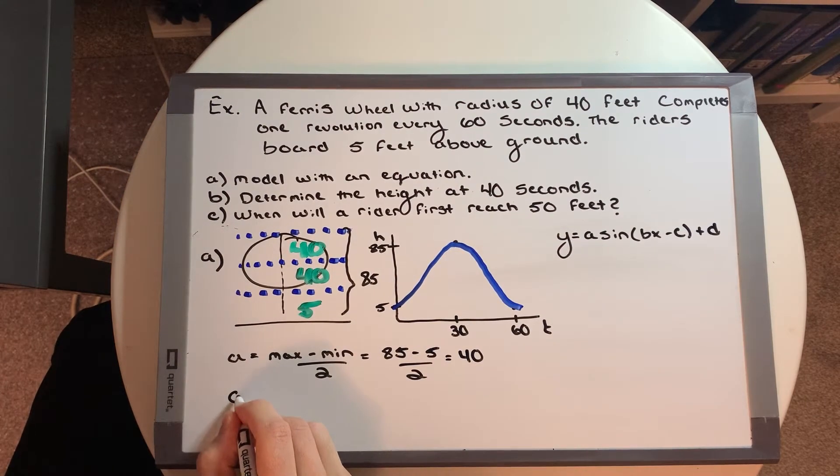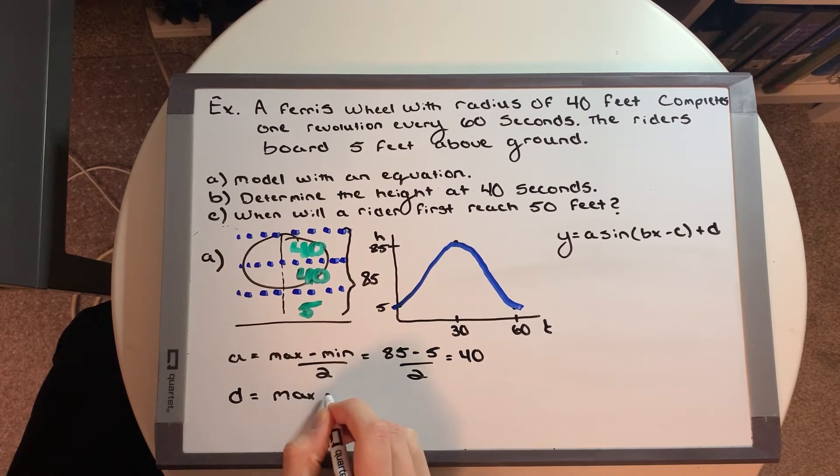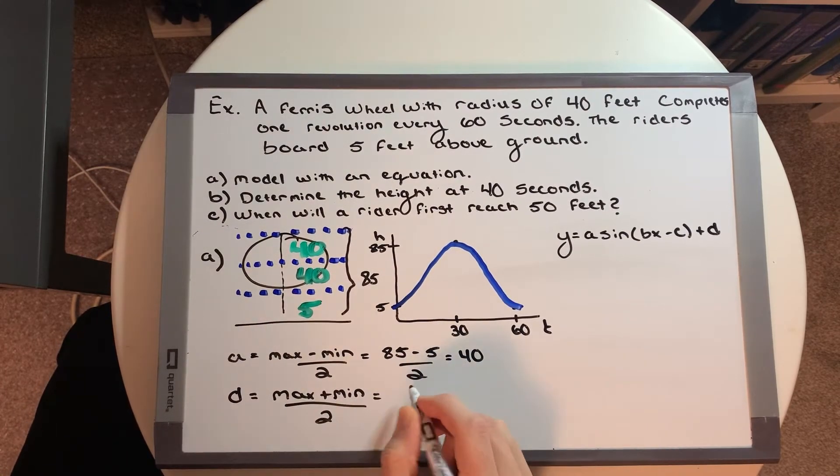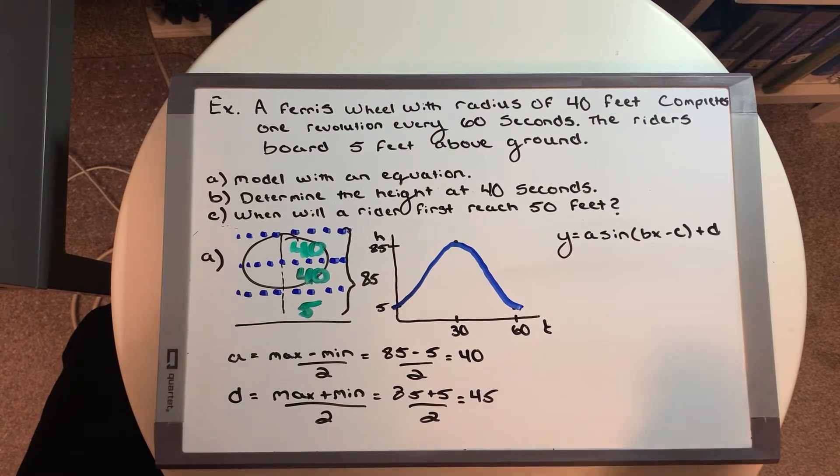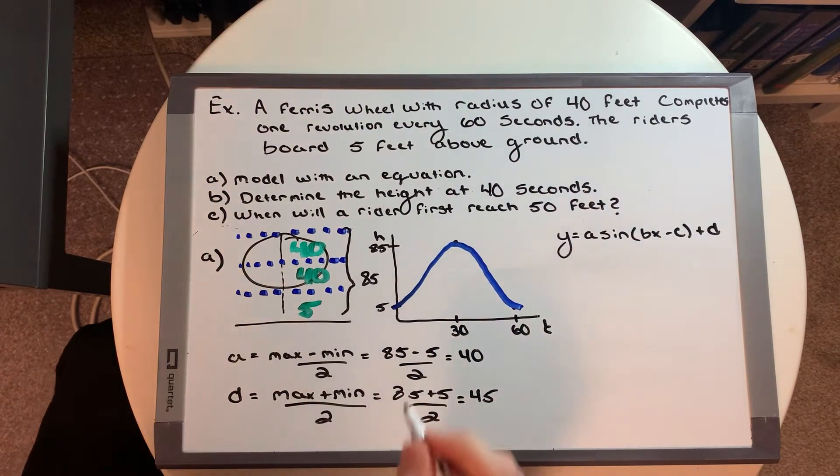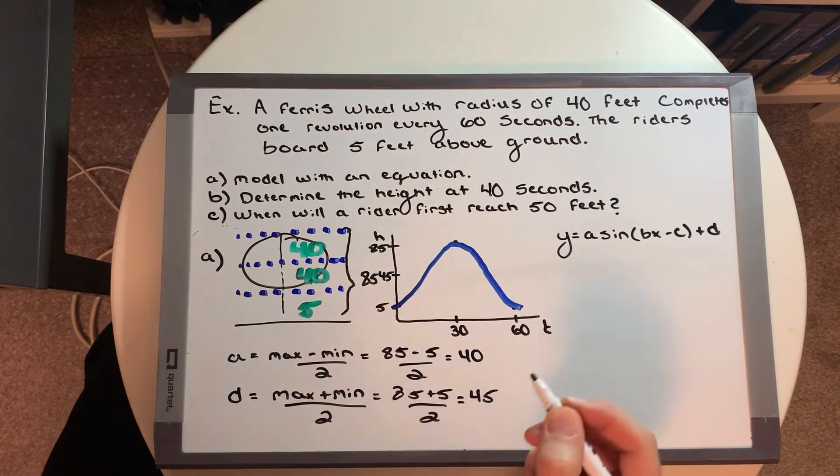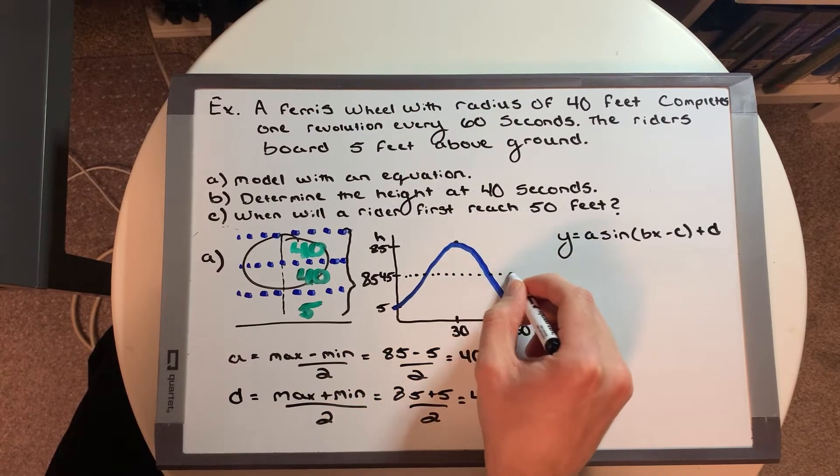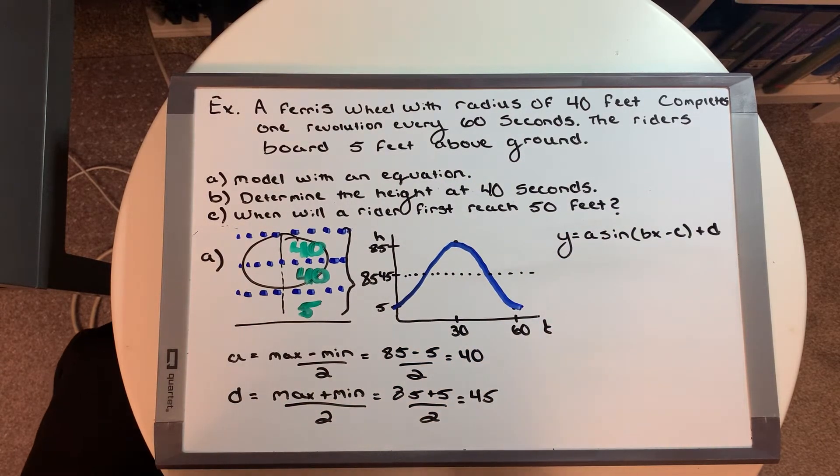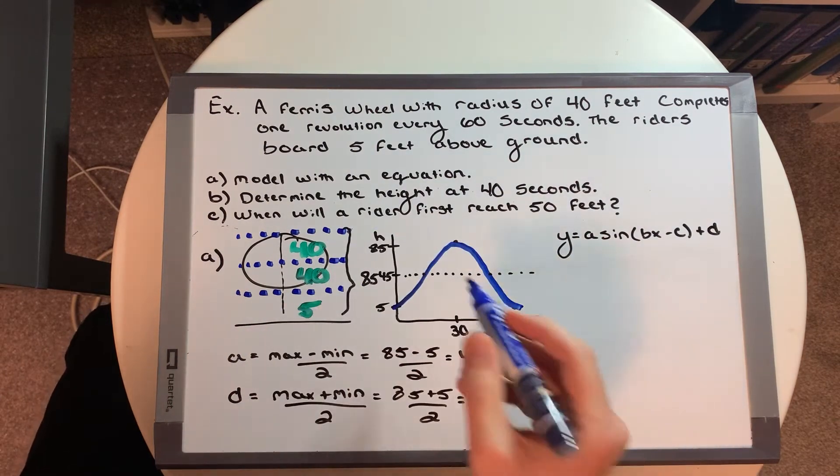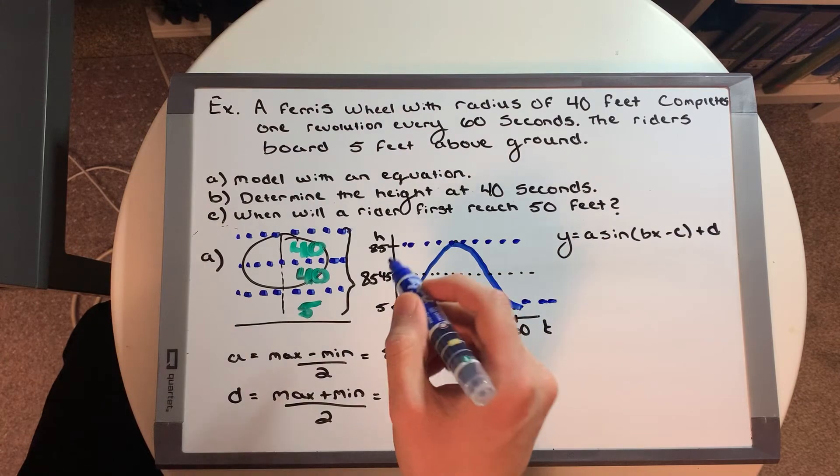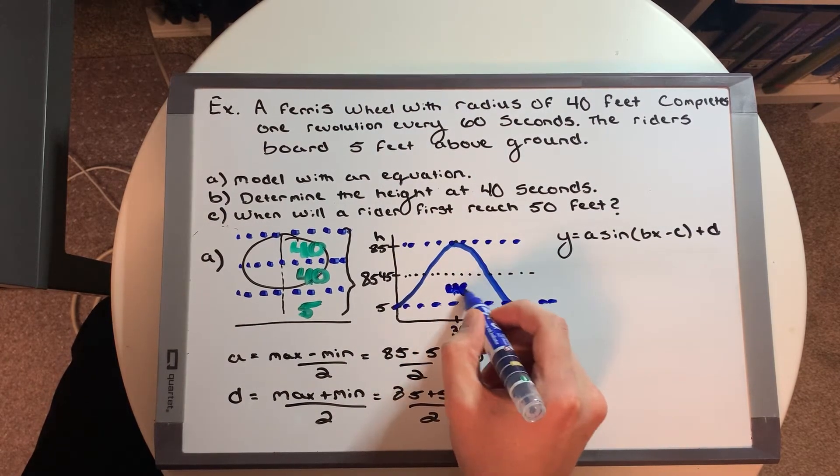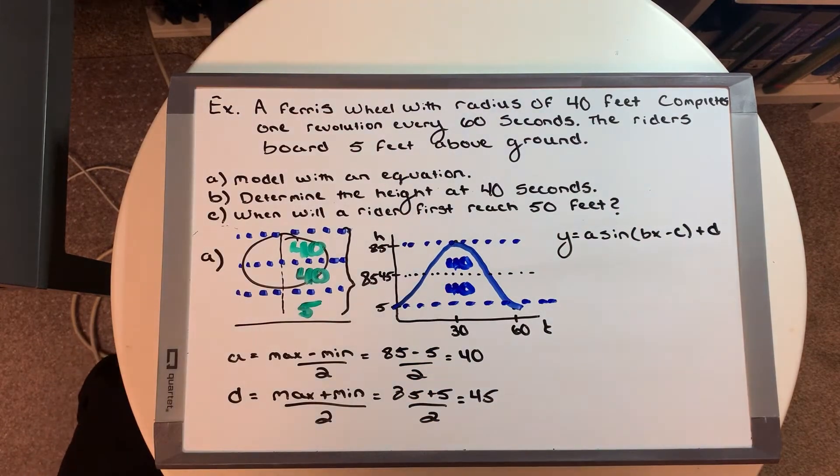And then we say that our d value is max plus min over two, which is equal to 85 plus five over two, which is just equal to 45. And that's actually equal to our midpoint. So we label our midpoint on our graph right here, which would be the 45. And then that actually tells us that the radius that was existing on this part of the graph here, or the wheel part of the diagram, that actually just represents the amplitude, which is the distance from five to 45 and 45 to the 85. So we say 40 goes here and 40 goes here. Okay, perfect. So now we have our graph set up. We have our amplitude. We have our midpoint. What else do we need?